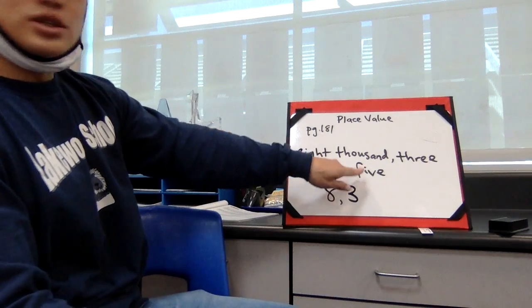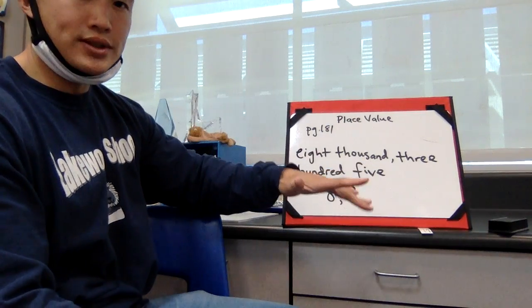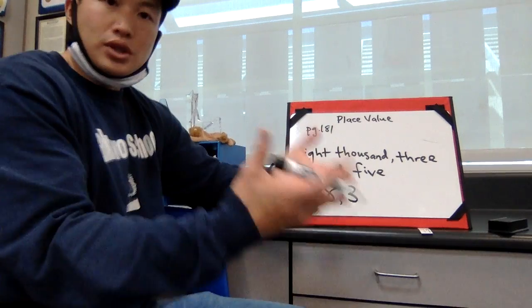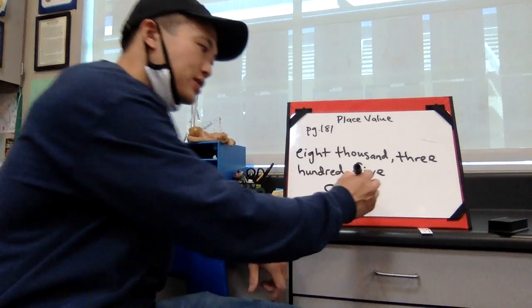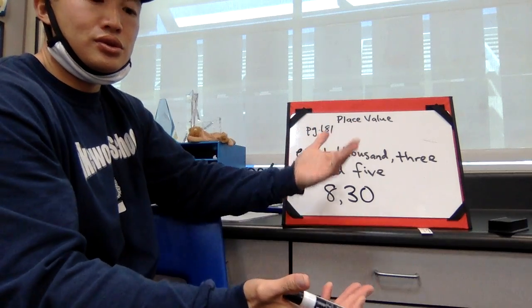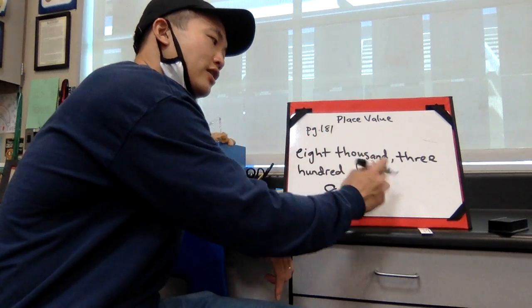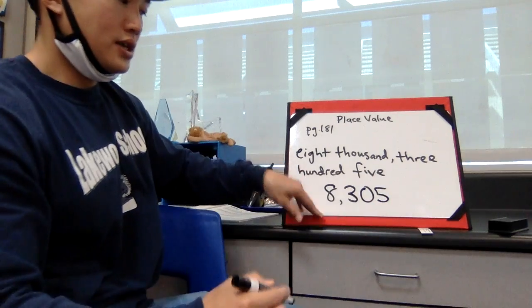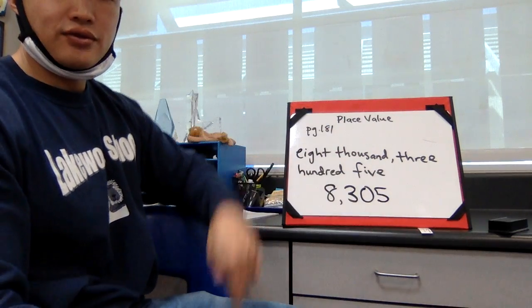And then this one doesn't have a forty, a thirty, a twenty. It doesn't have tens. So what do we do when it doesn't have it? We put a zero. Zero is kind of our place marker because we don't say zeros when we're talking about numbers. And then five. So it should look like this: 8,305.